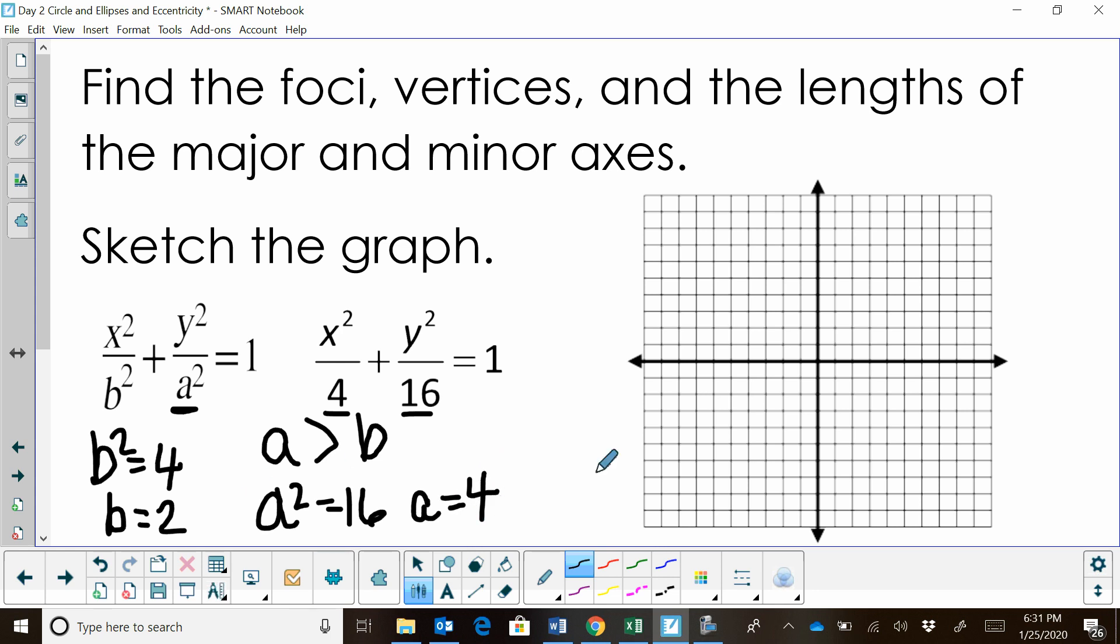Now I'm going to go to my graph and plot some points. We know we have a center at the origin. The a value is 4 and that's my major axis. I need to go back and see which axis I'm working with for a. Since it's y squared over 16, that means my major axis is going up and down the y-axis.